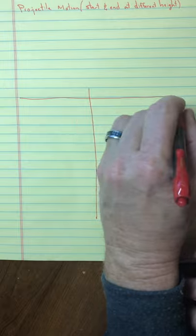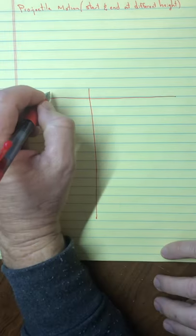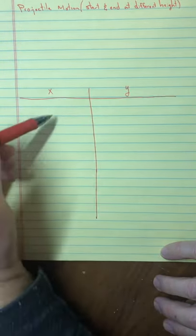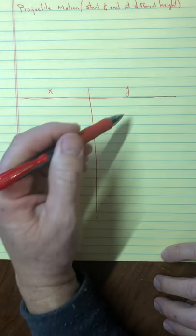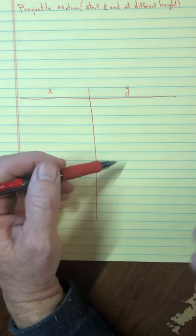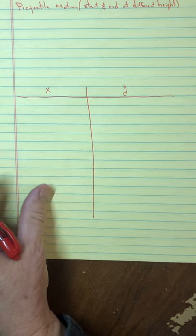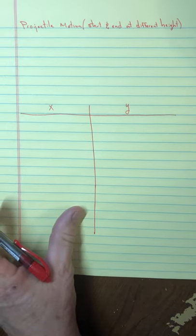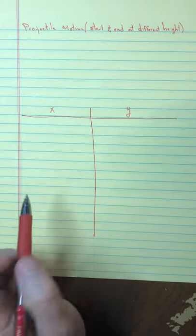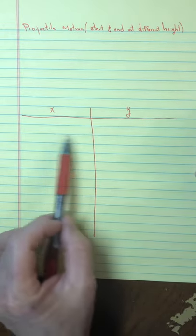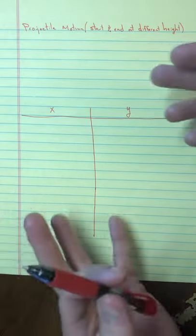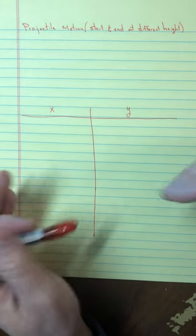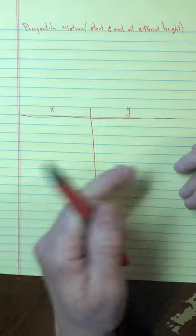What helps me is to make a little chart and do all my math for the x direction and all my math for the y direction. Then it really looks like the stuff I've been doing with one-dimensional motion. If you know how to do one-dimensional motion, you know how to do these harder two-dimensional problems — because you just do the one dimension twice, one for the x and one for the y.